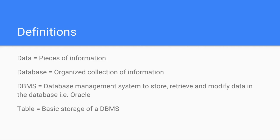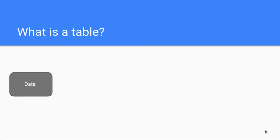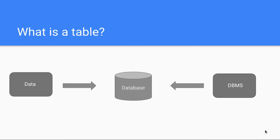I'll show you a nice graphic because I love graphics — it makes life so much easier to understand. So, what is a table? We start from the raw data: age, height, address, date of birth. On the other hand we have the DBMS — the Database Management System — Oracle in this case. In the middle we have the database, which is the structured data. On the right-hand side is the management system to work with it, and on the left-hand side is the data that goes into it.